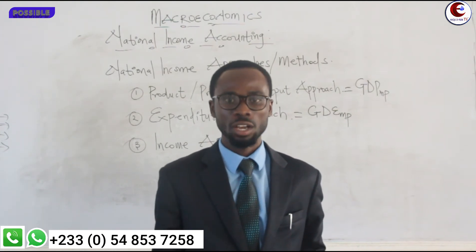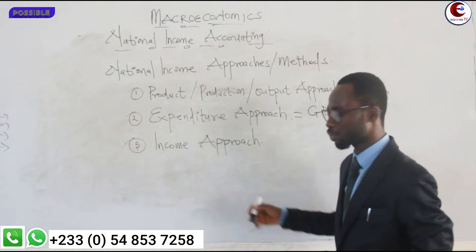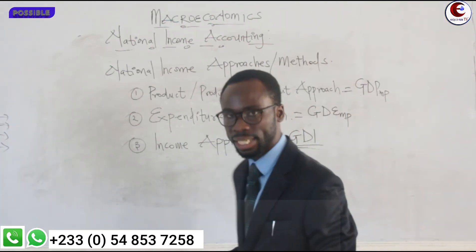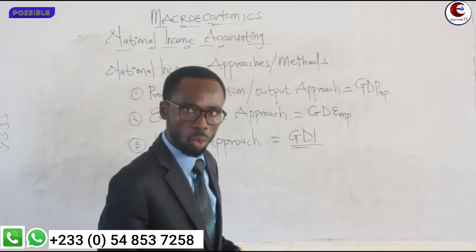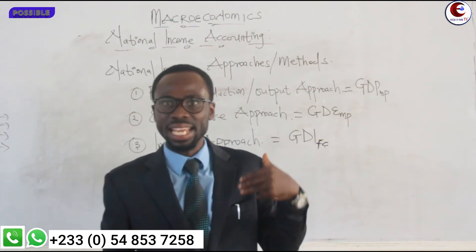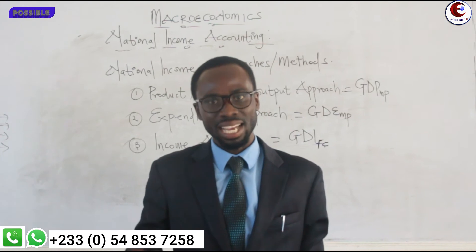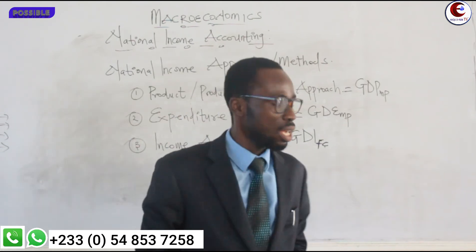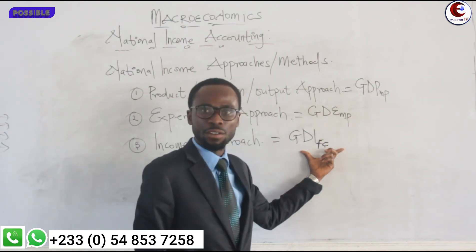The next one is the income approach. The income approach will give us gross domestic income. Now, be very particular about the income approach: when you put all the items together, you are not going to get the value at market price — you are going to get it at factor cost. This is because the components of income are the rewards we get from the factors of production.